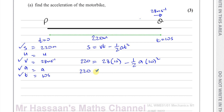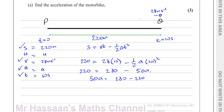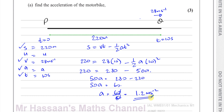So we have 220 equals 280 minus — that's a half times 100, which is 50 — minus 50A. So 50A equals 280 minus 220, which gives 50A equals 60. So A equals 60 over 50, which is 1.2 meters per second squared. That's the acceleration throughout this whole journey. That's part A.